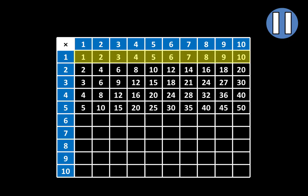In this row, we can see all of the multiples of 1 from 1 through 10: 1, 2, 3, 4, 5, 6, 7, 8, 9, 10. And in this column, we'll see the same multiples: 1, 2, 3, 4, 5.